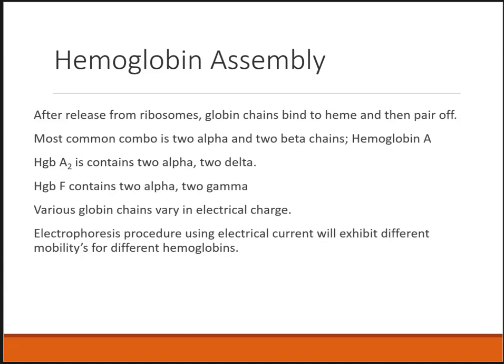In review: the globin chains, once released from the ribosomes in the cytoplasm, will bind to heme, then pair off as alpha-beta, alpha-beta. The most common is 2 alpha and 2 beta, which is hemoglobin A. Hemoglobin A2 is 2 alpha, 2 delta. Hemoglobin F is 2 alpha, 2 gamma. These three types of hemoglobin have different globin chains made up of different amino acids. We try to separate them by using electricity — electrophoresis — because different amino acids respond differently to electrical charge.